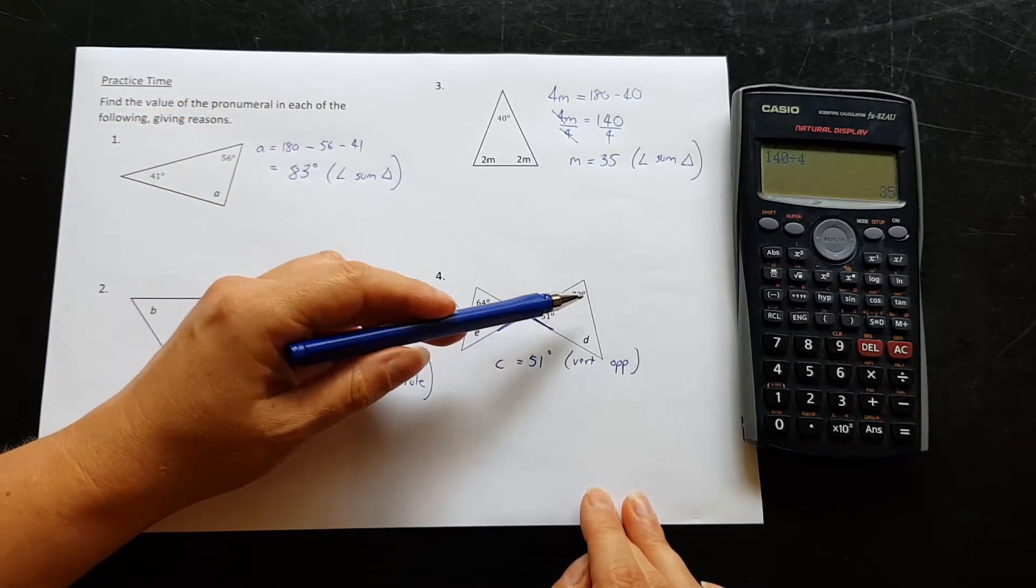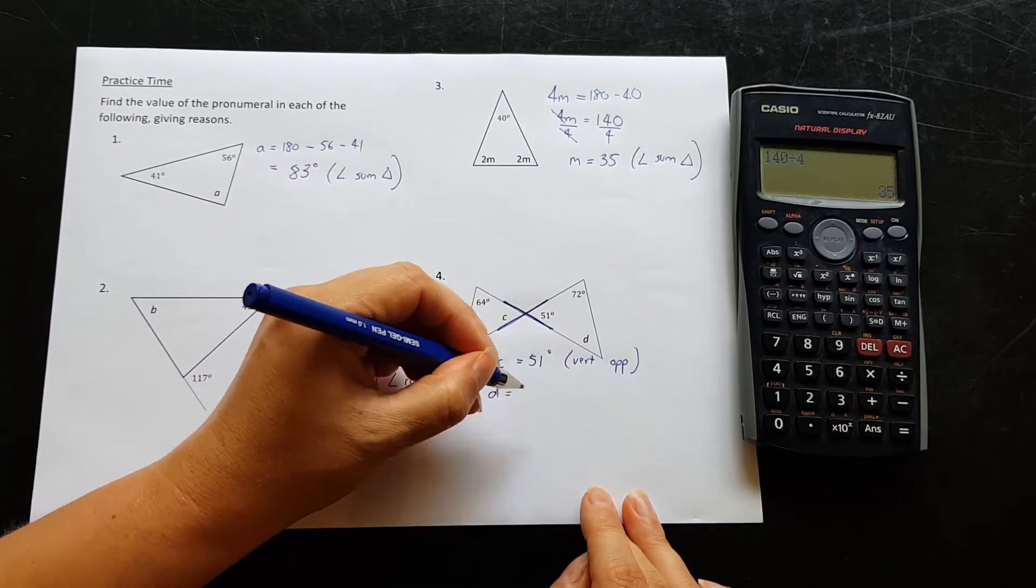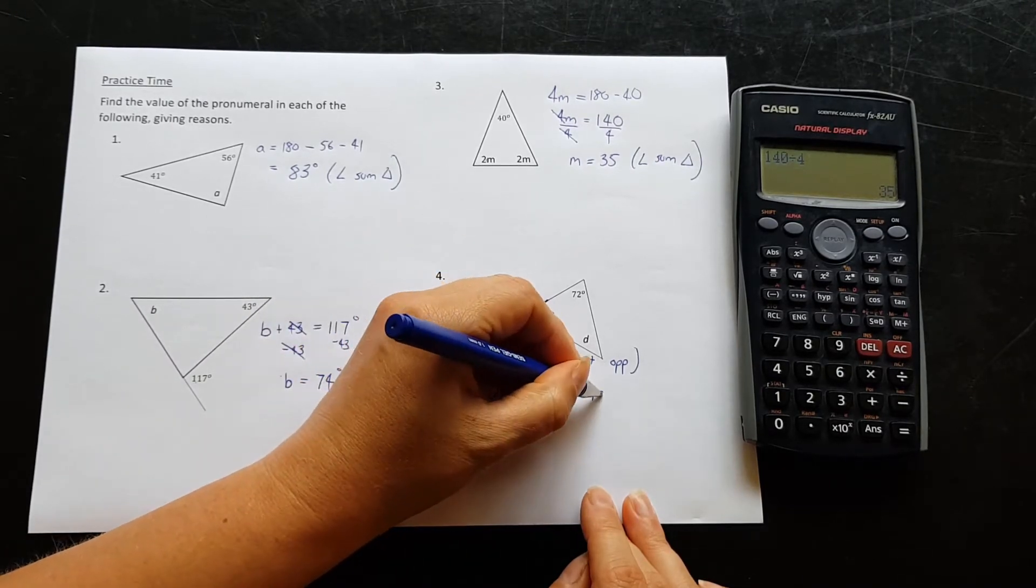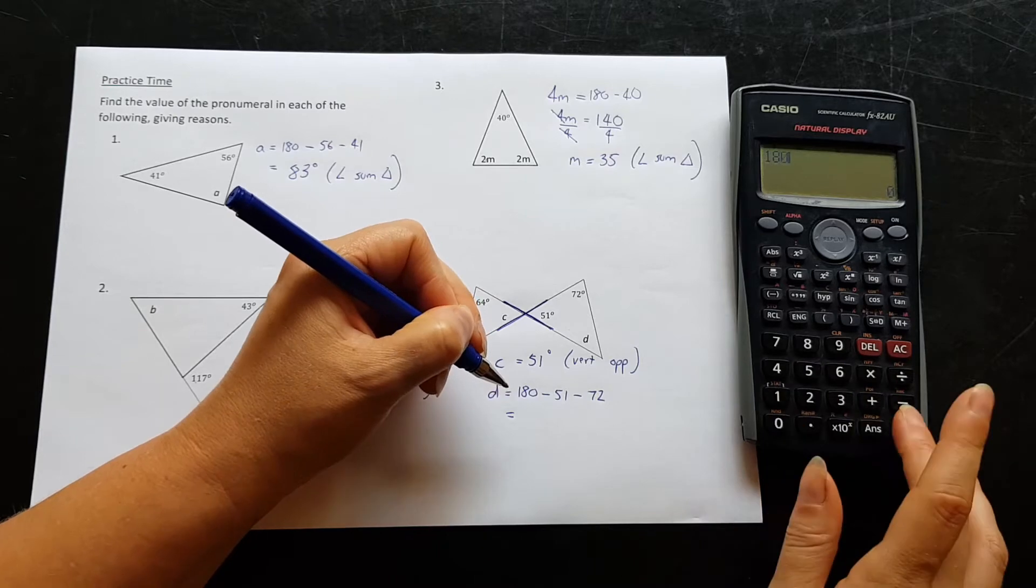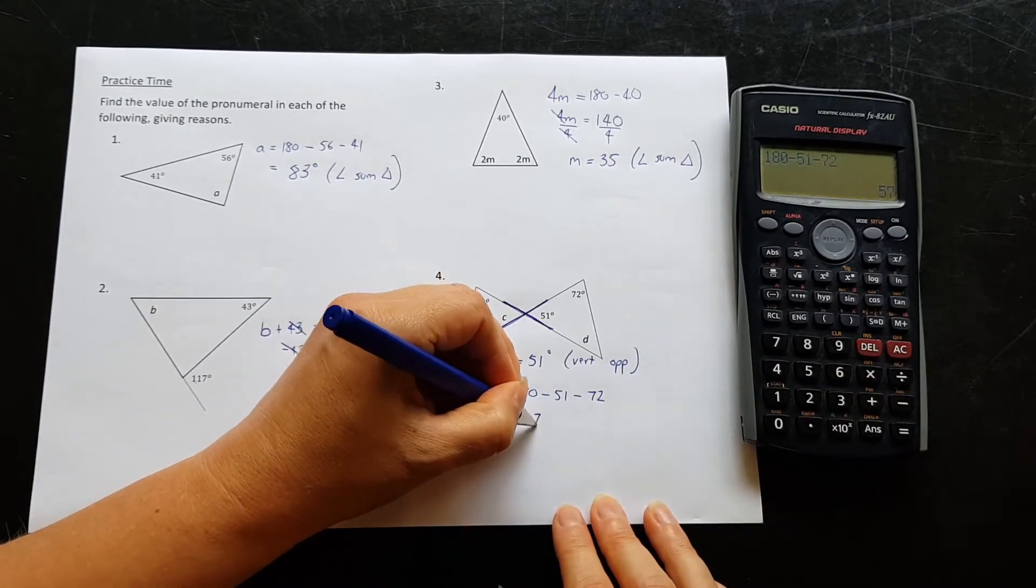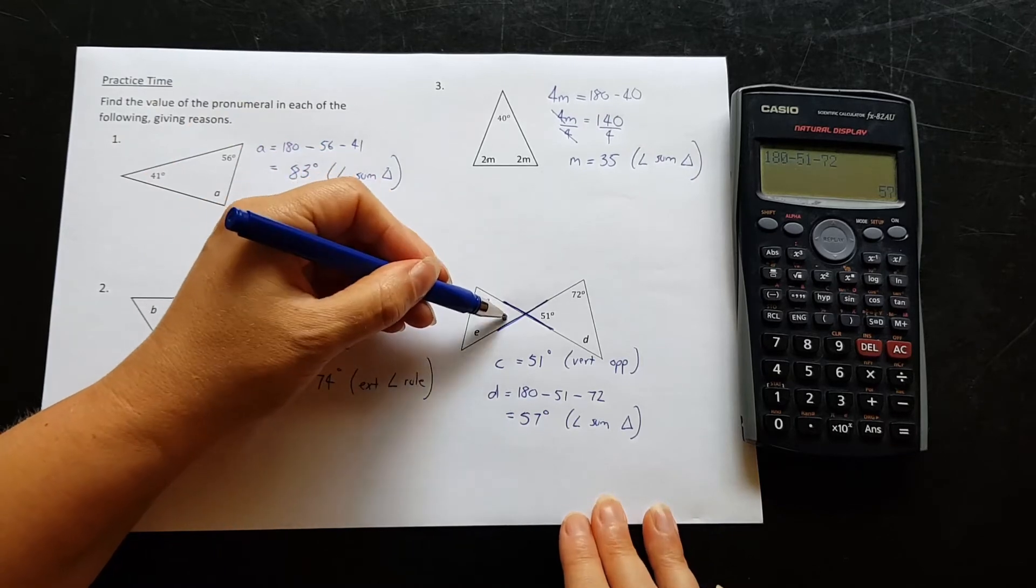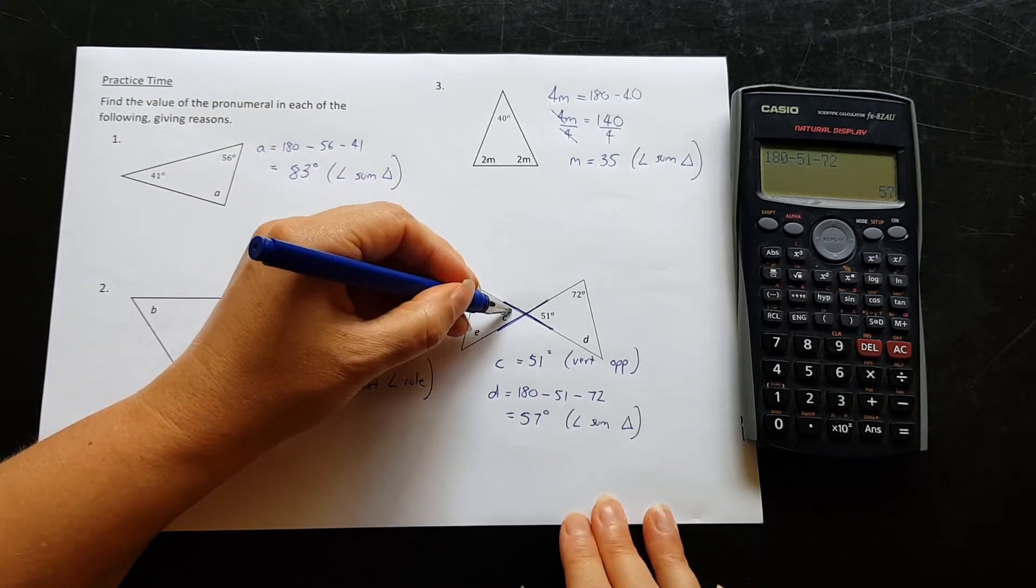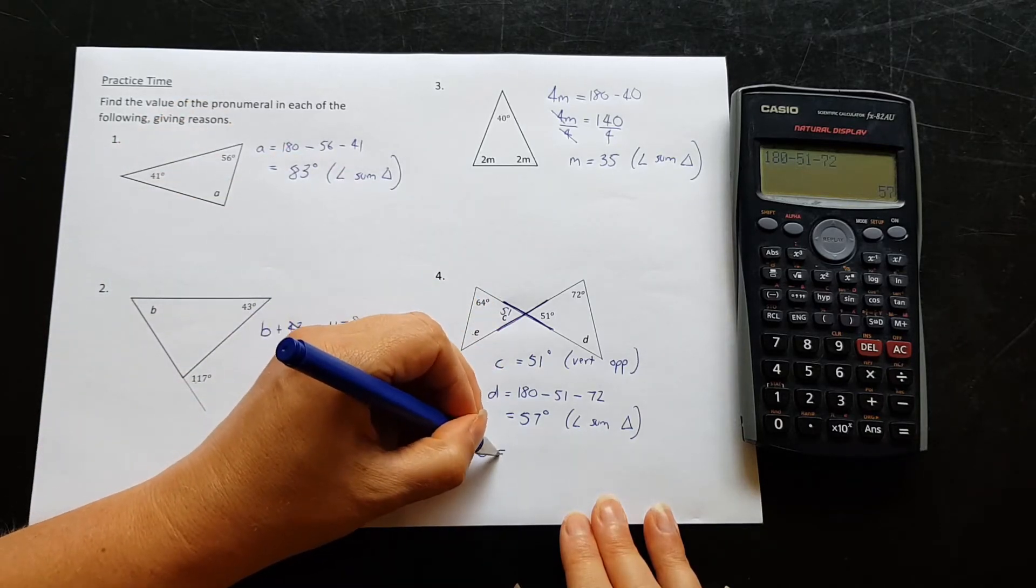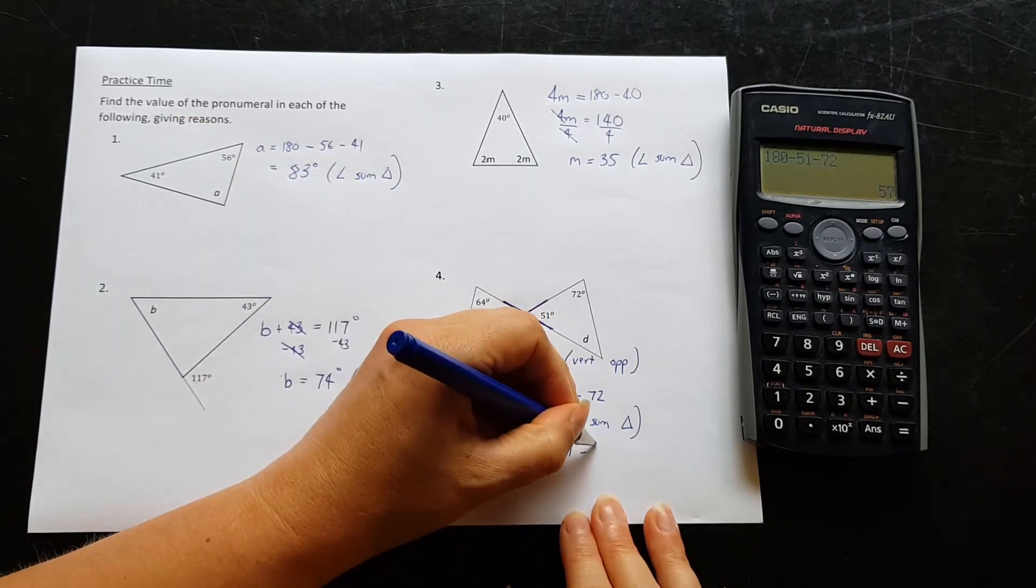We can find d by doing the angle sum of this triangle. d is going to be 180 minus 51 minus 72. So we get 57 degrees. That was angle sum of a triangle. Now when we found out that c was 51, we could also do angle sum of a triangle here to find e. e is equal to 180 minus the 51 minus the 64. 65 degrees.